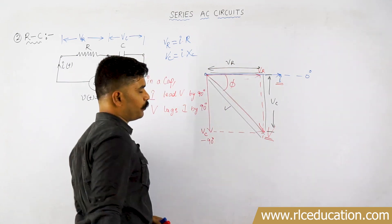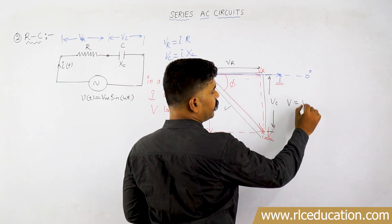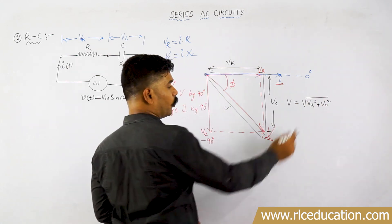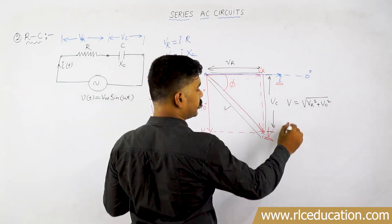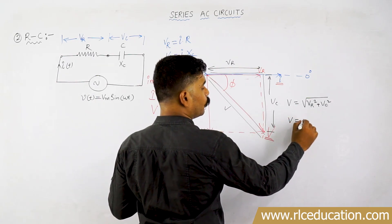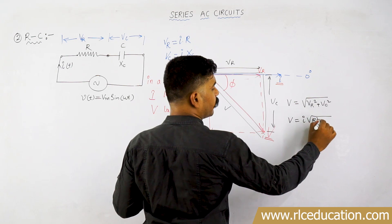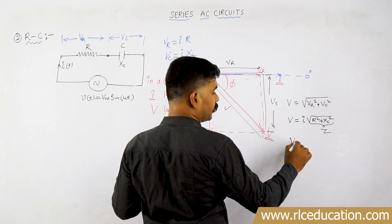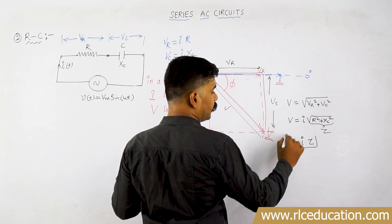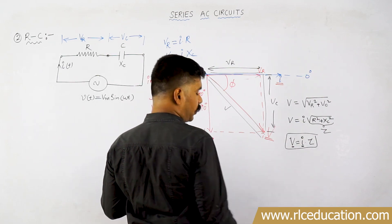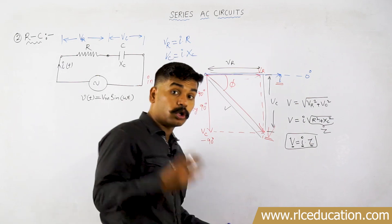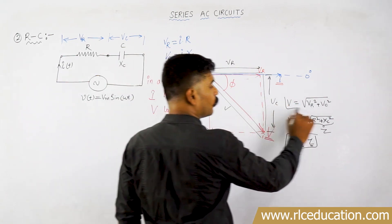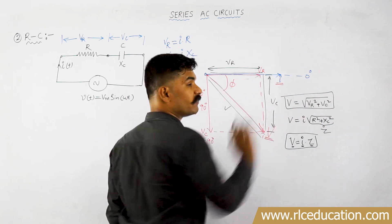By applying the Pythagorean theorem, the total voltage V = √(Vr² + Vc²). Substituting Vr = I×R and Vc = I×Xc, we get V = I×√(R² + Xc²), which can be written as V = I×Z, where Z = √(R² + Xc²) is the total impedance. Z is the total opposing quantity in the circuit, including both R and Xc. So whenever you find the total voltage V, it is √(Vr² + Vc²).